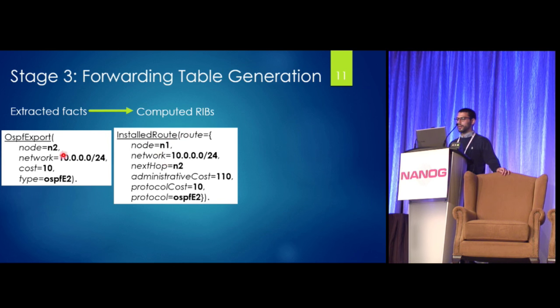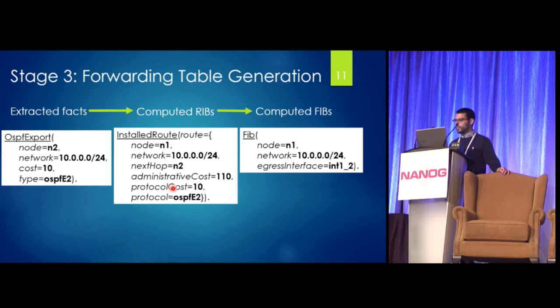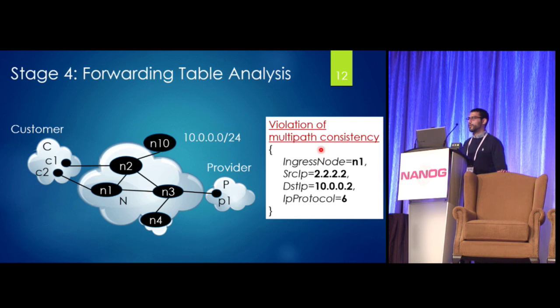So for instance, that network being exported from N2 may make it onto N1 with such-and-such cost. And from there, we're also able to figure out what interface everything will go out. So we have the forwarding tables as the final output of that step.